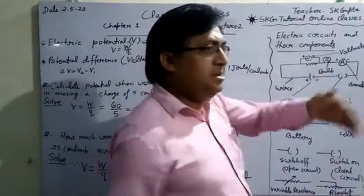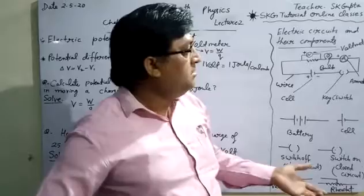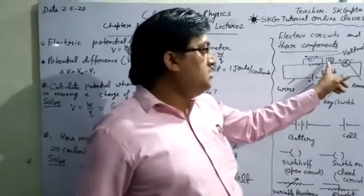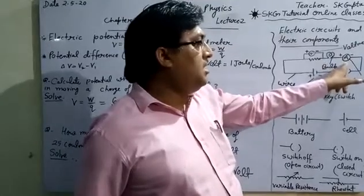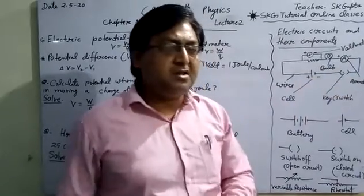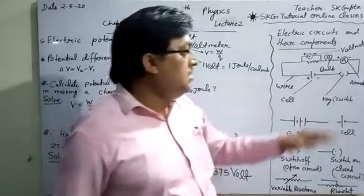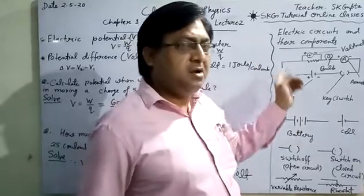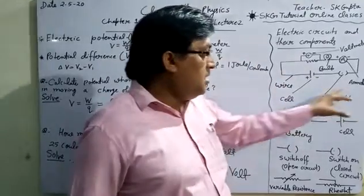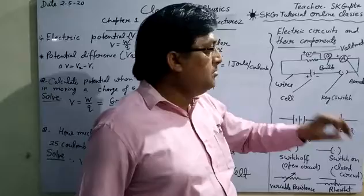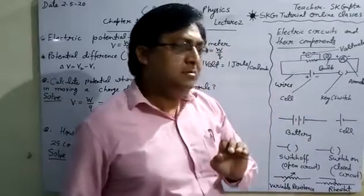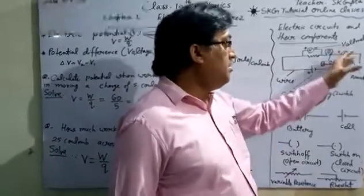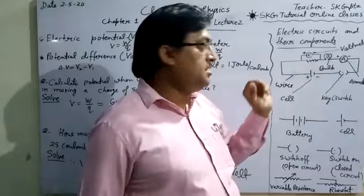This is voltmeter that is indicated by V, positive and negative terminal. Voltmeter is used for measuring potential or potential difference across two points in electric circuit. This is symbol of electric bulb. Here A is ammeter used for measuring amount of electric current. Ammeter is always connected in series, but voltmeter is always connected in parallel connection. Ammeter has very less resistance but voltmeter has very high resistance.